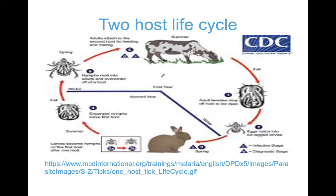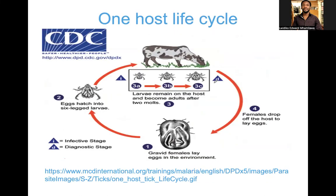In the two-host life cycle, the tick passes through a large animal in spring and then a small animal in the next spring season, with different stages feeding on different animals. In the one-host life cycle, larval, nymphal, and adult stages all remain on the same animal, with only the engorged adult female leaving to lay eggs.